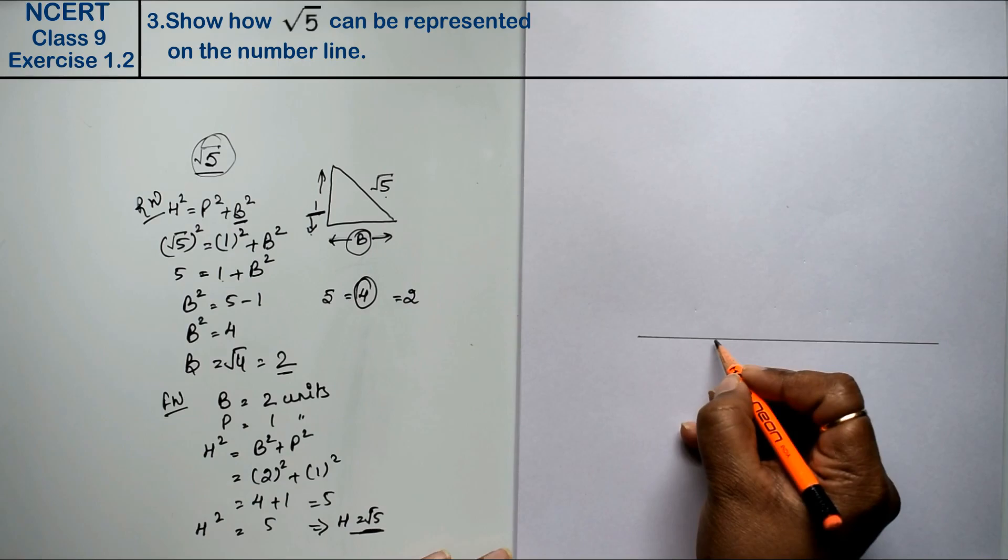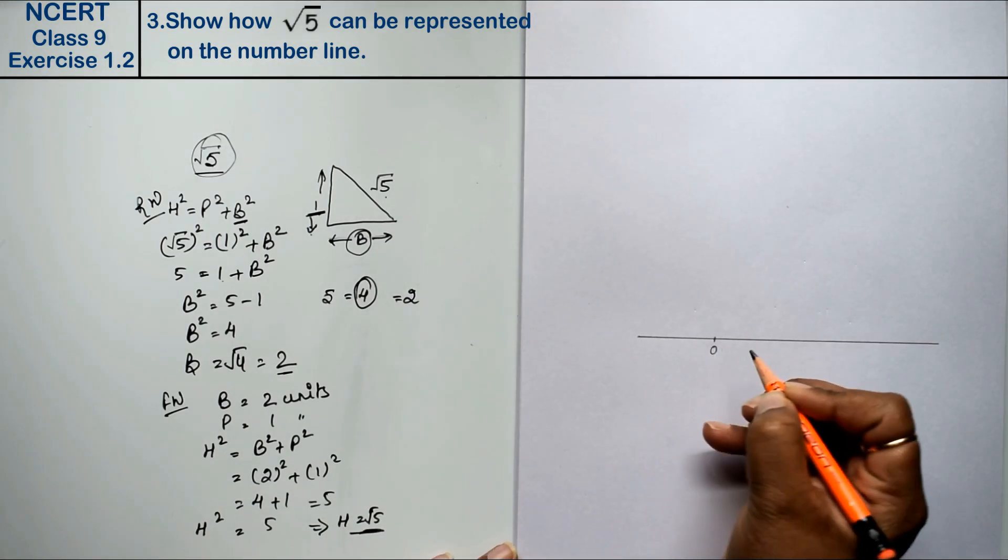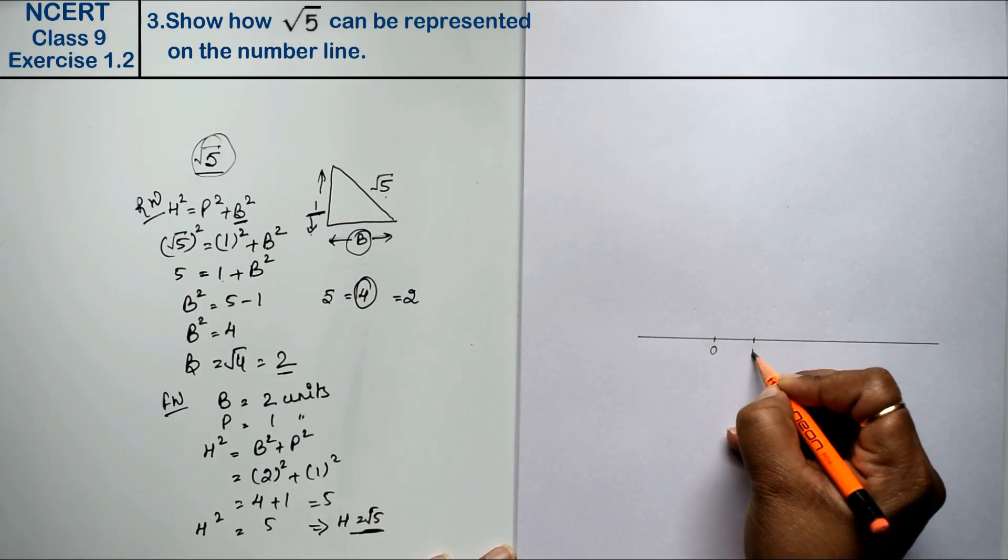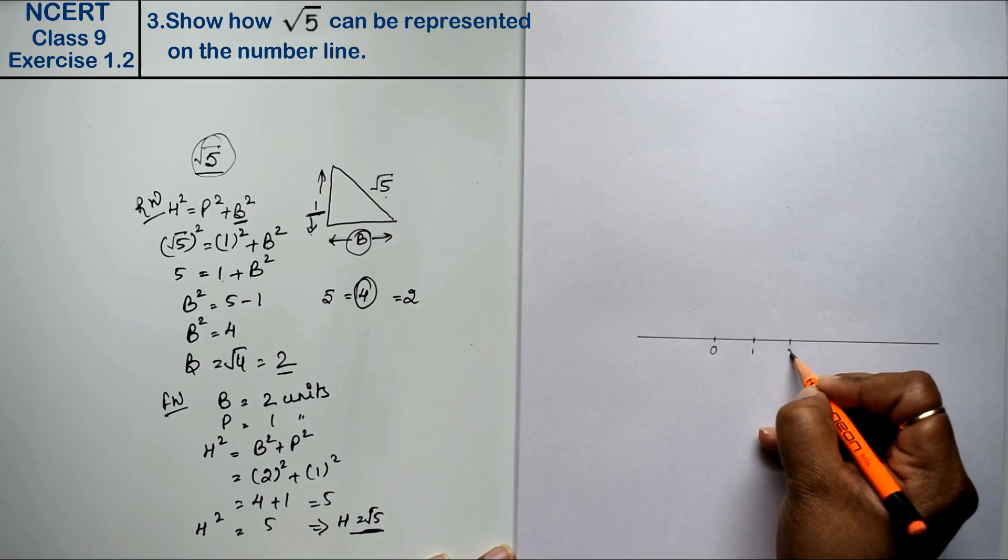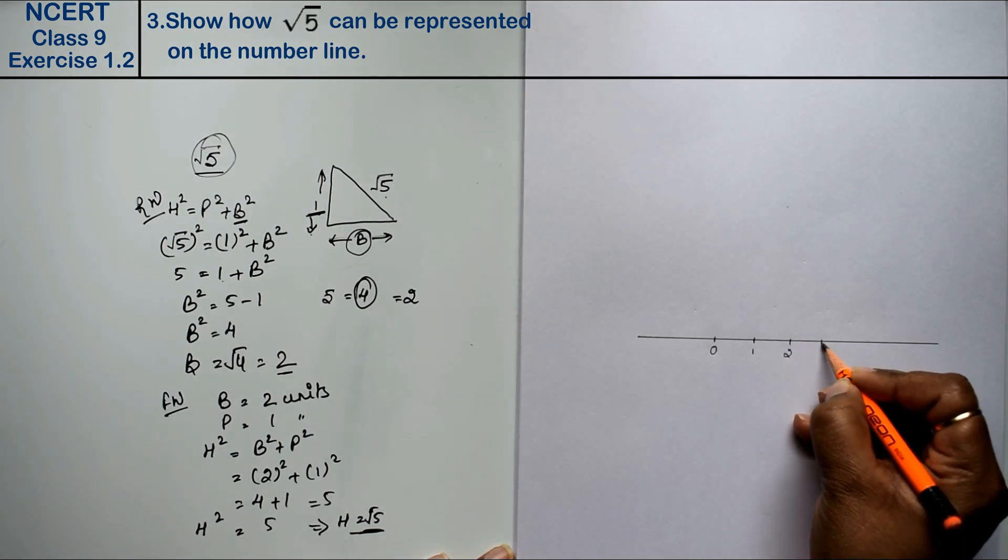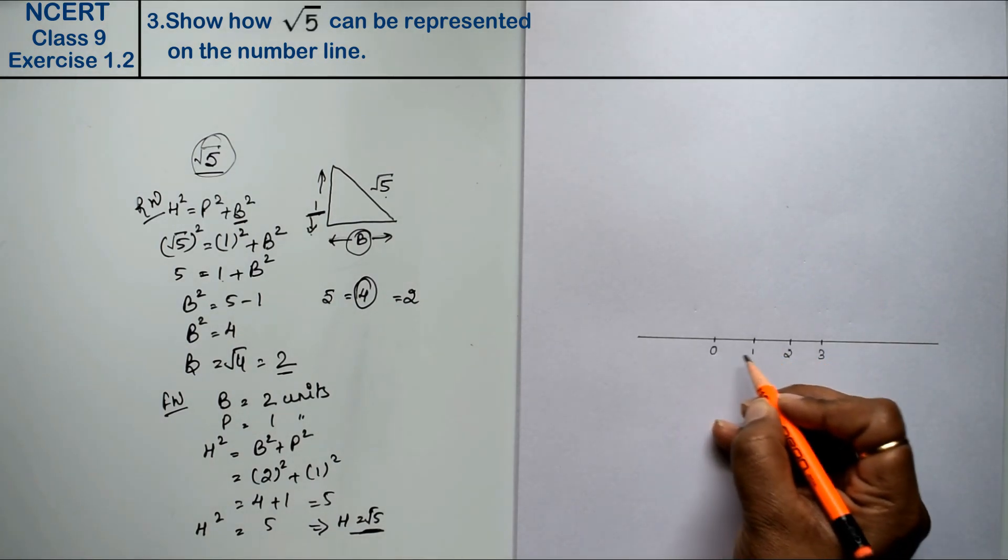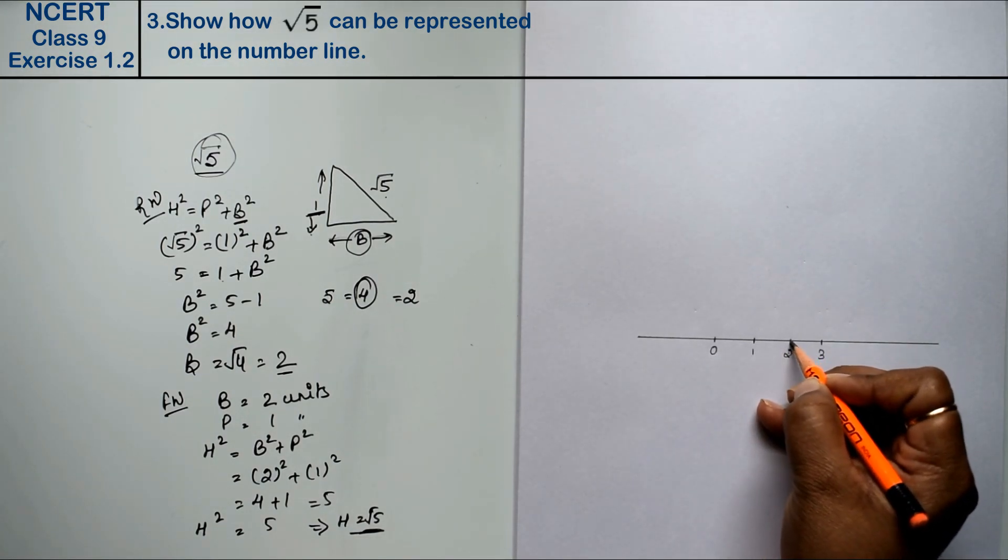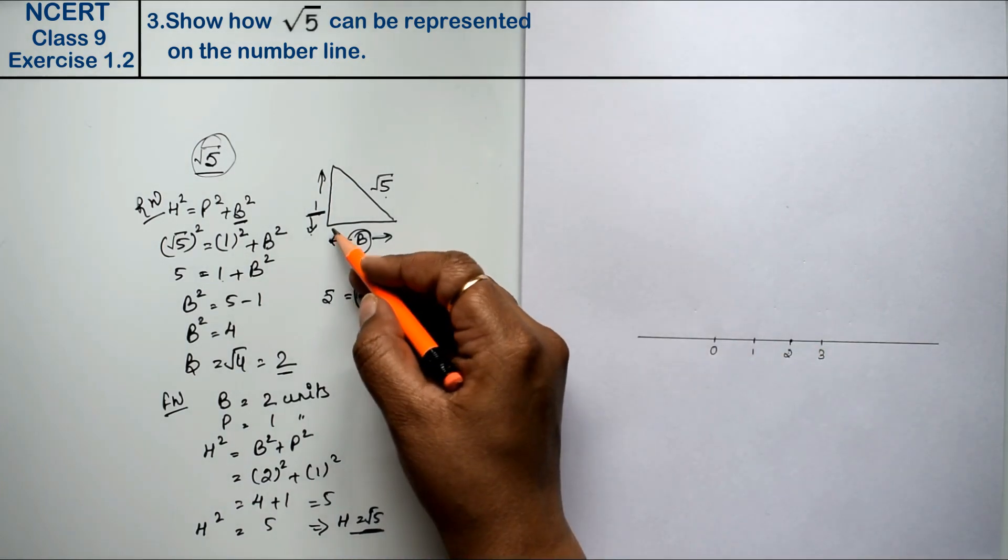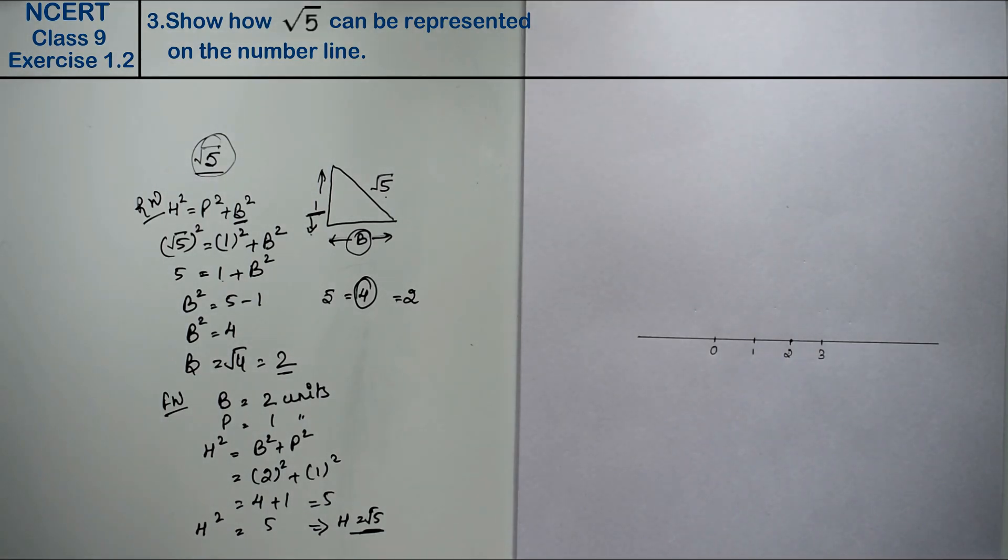And point mark it on this. 0, 1, 2. You can also mark it on scale. I will mark it without scale. We have taken base 2 units. So this is our base. Now we know that it is a 90 degree angle in Pythagoras, so we will make it a 90 degree angle.